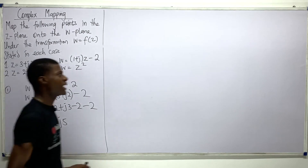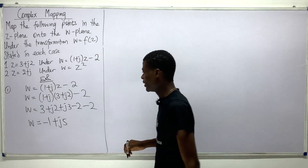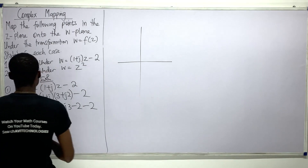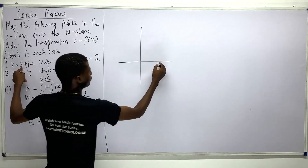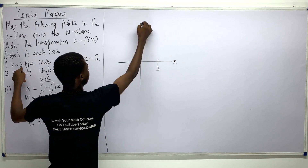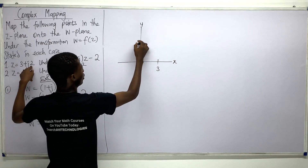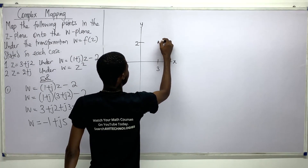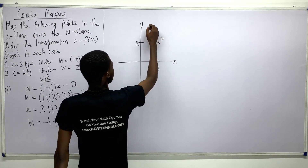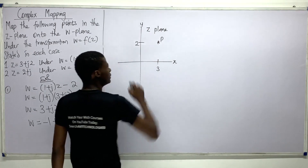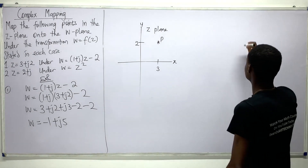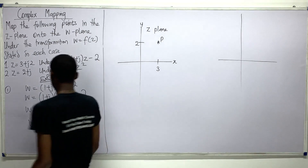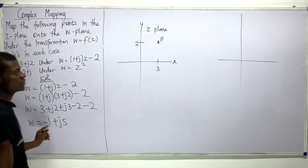Let me draw this. Starting with the z-plane: my x-value is 3 and my y-value is 2, so I plot the point at x = 3, y = 2. I'll call this point P. That's our z-plane.